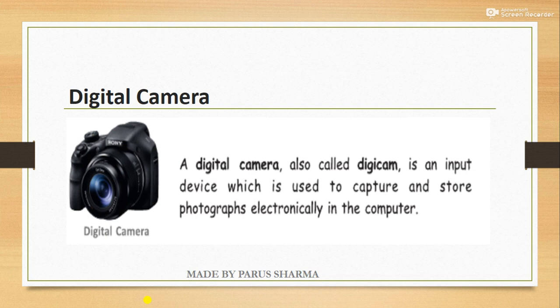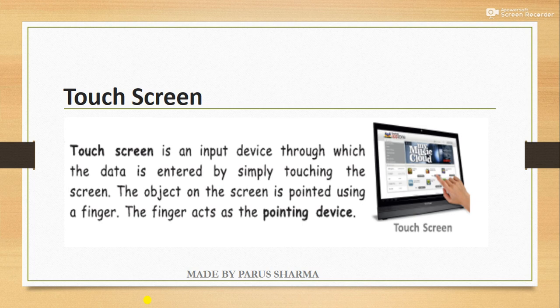The digital camera is also an input device used to store photographs captured in a camera, which we can then transfer to the computer. The touchscreen is also an input device through which data is entered by simply touching the screen. It is also used as a pointing device — your finger acts like the pointing device.